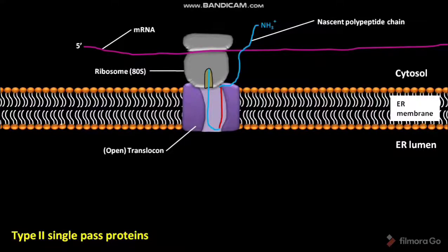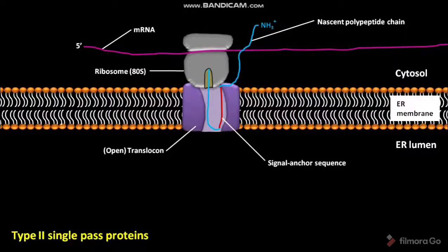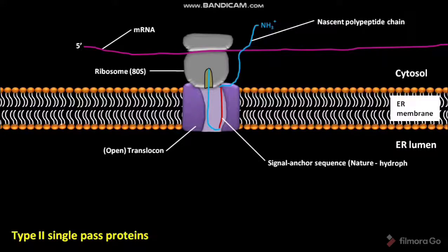The nascent polypeptide chain has the signal anchor sequence. This signal anchor sequence is located at the C-terminus of the nascent polypeptide chain, and its nature is hydrophobic.